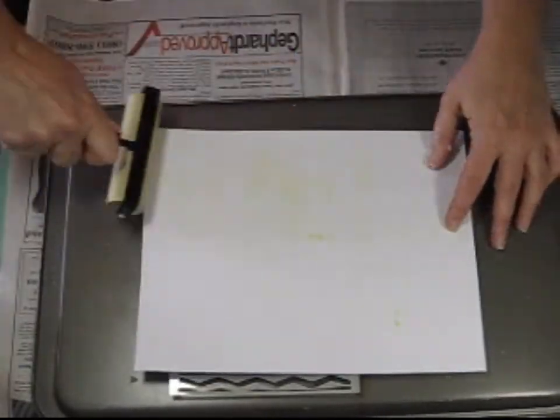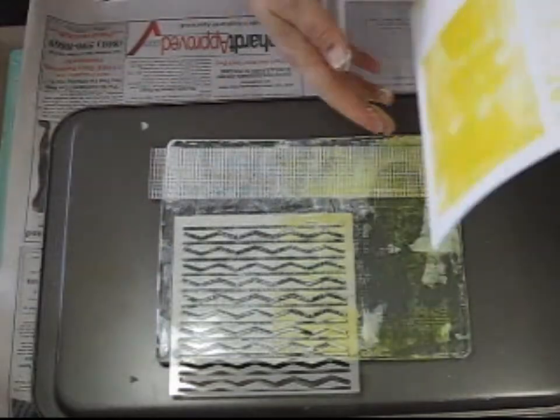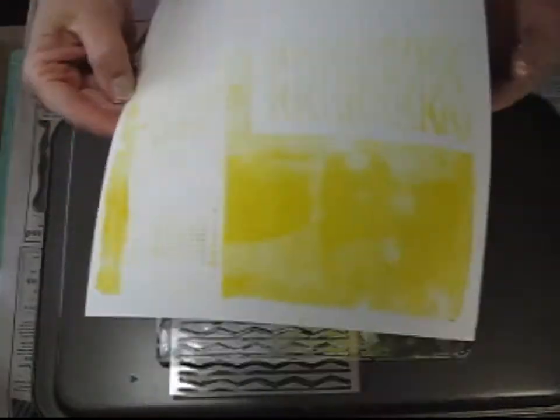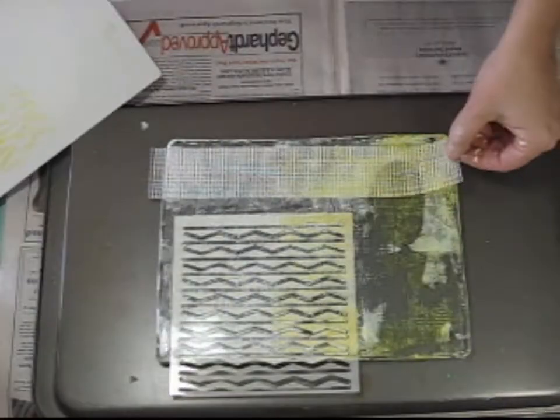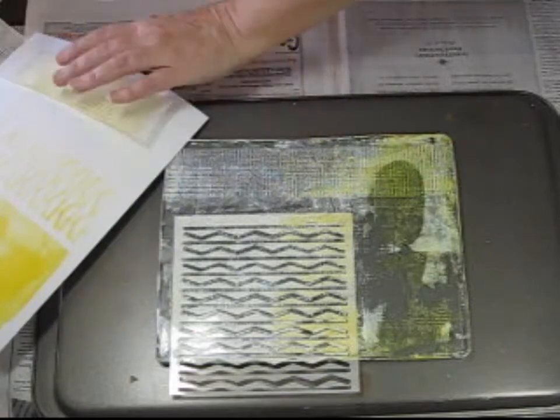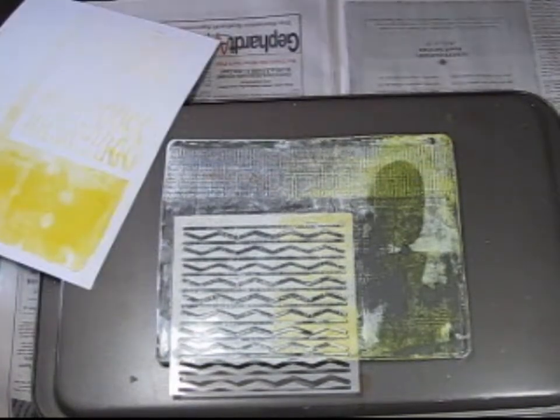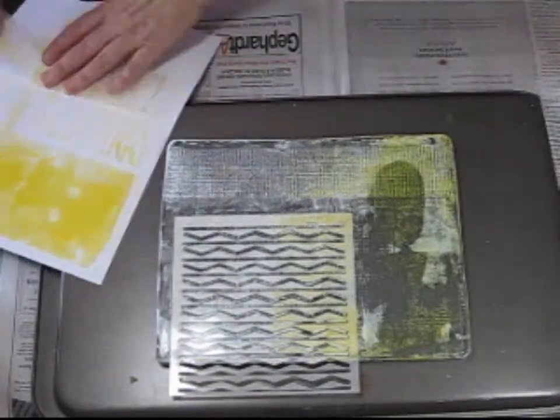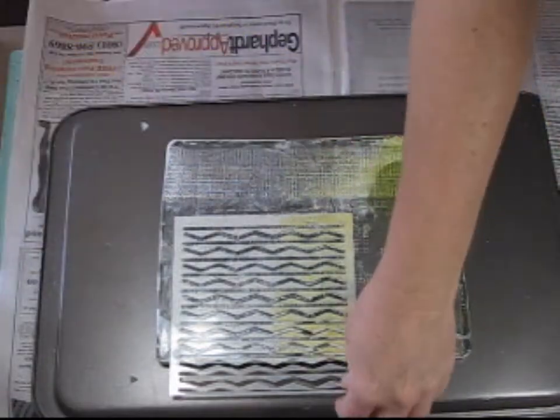And again, because the stencil has a little bit of thickness, using a brayer, it really helps to try to get into those crevices. And I'm just taking actually the drywall tape and taking any paint that's on it and adding it to my paper.